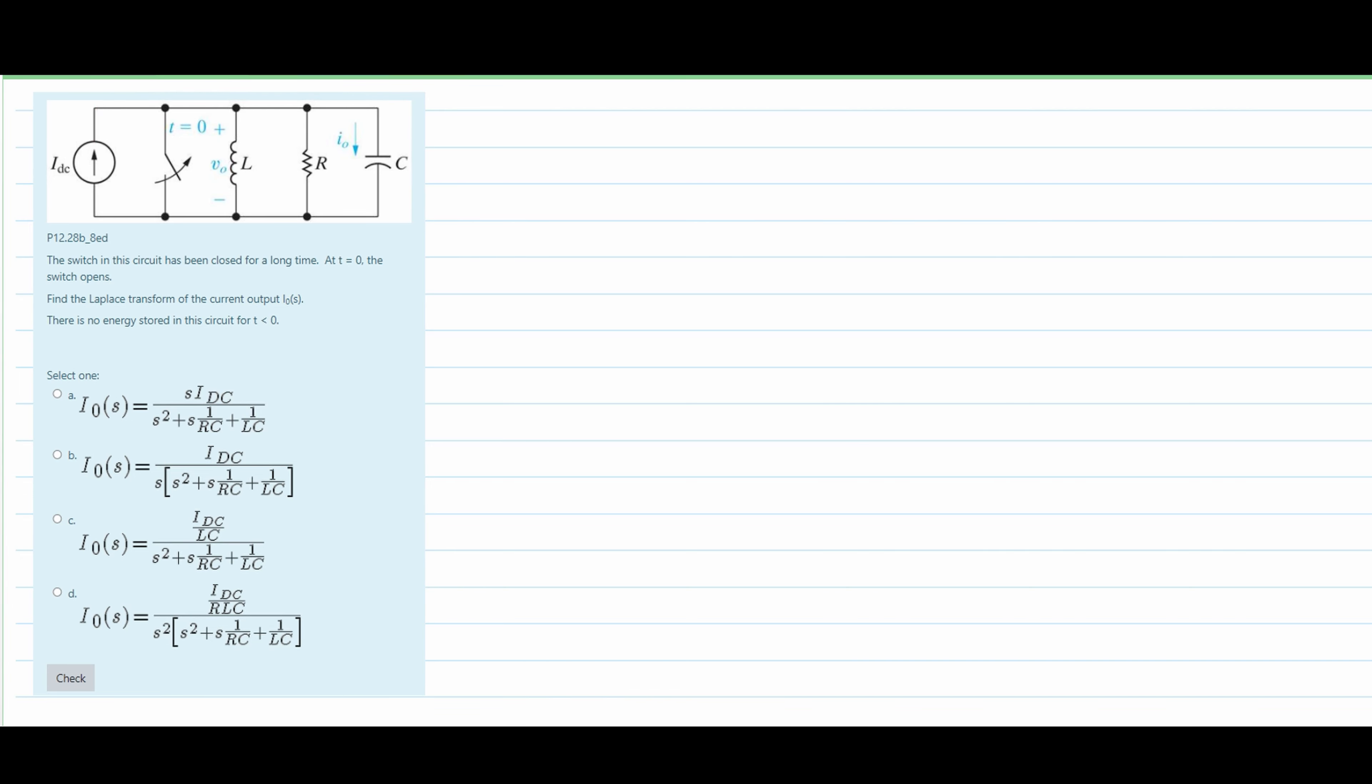What we are going to do, since we are looking at time, is convert this. This IDC, the initial direct current, needs to be IDC with respect to time. So we are going to have IDC times U(t), and this is going to become IDC times 1 over s. That is how we convert that to time.